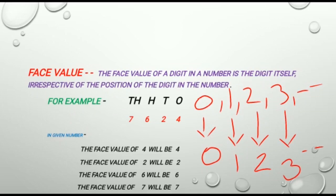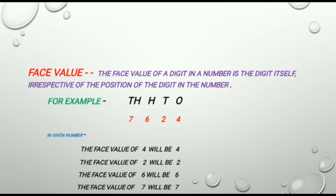As we know, the face value of a digit is the digit itself — it never changes according to the places. To make this more clear, let us see an example. We have a number 7624.